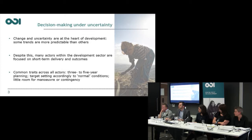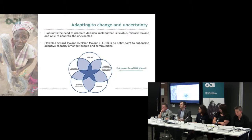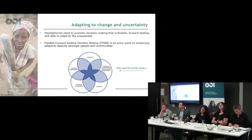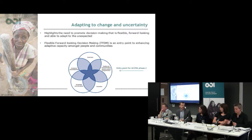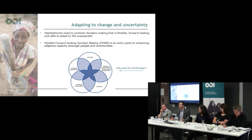So we've got a bit of an issue here, which is where Accra was trying to enter into. All of this background is really highlighting the need to help promote decision-making that is more flexible, that is more forward-looking, and that is able to adapt to the unexpected. We've termed this within Accra as flexible, forward-looking decision-making — FFDM. As long as the principles within FFDM are encouraged, hopefully this can help us make better decisions about the future.